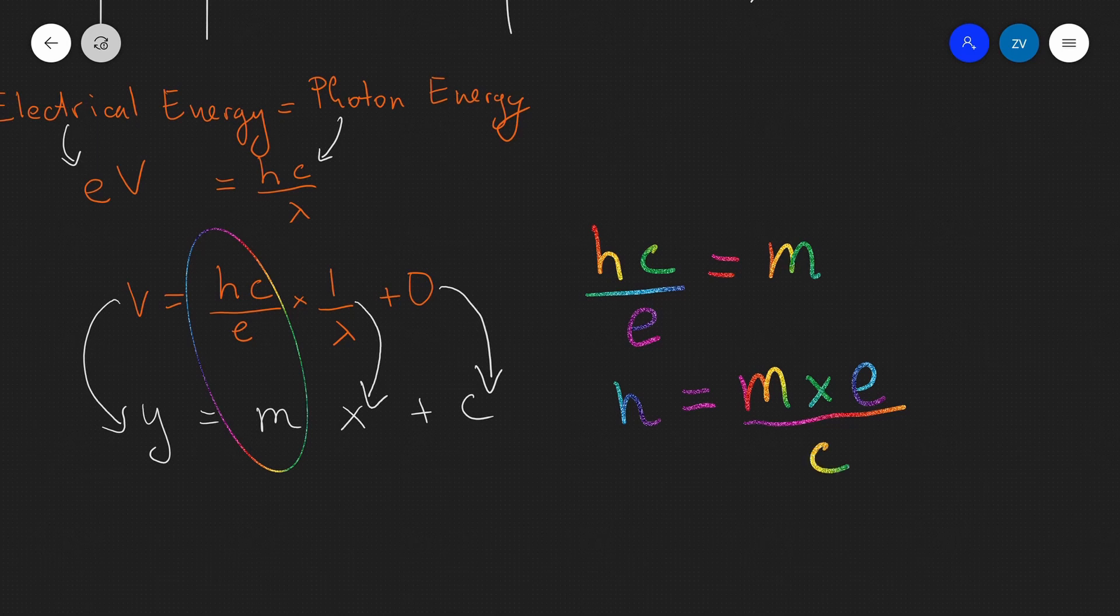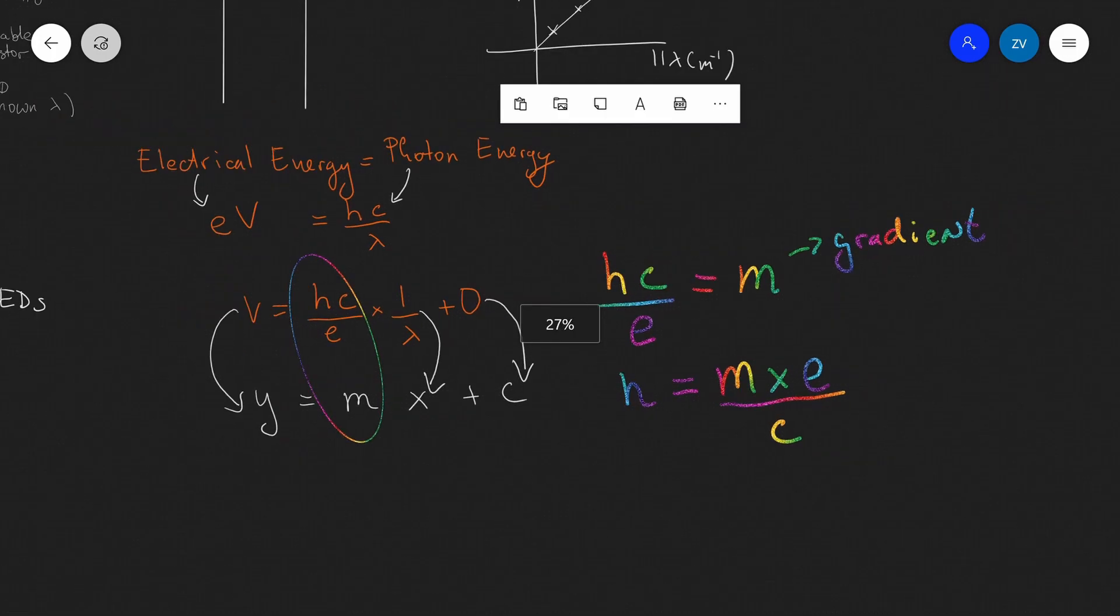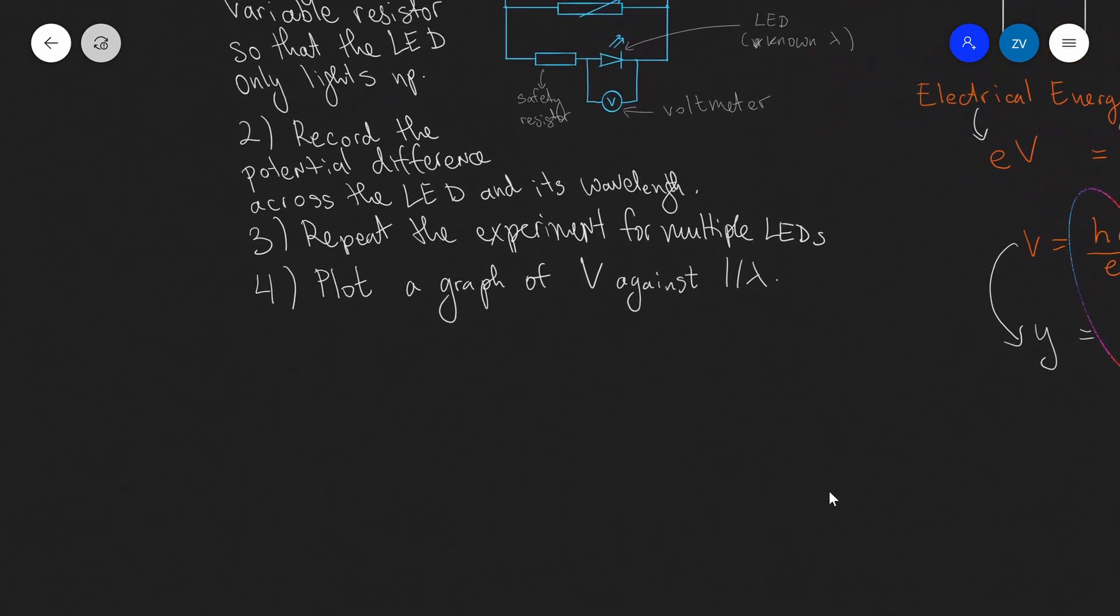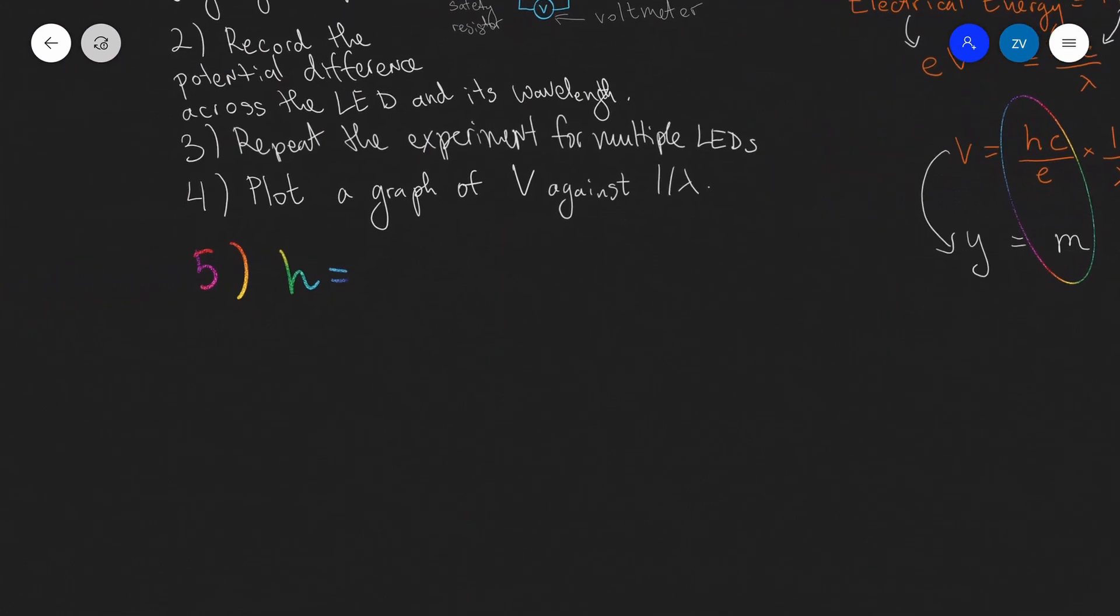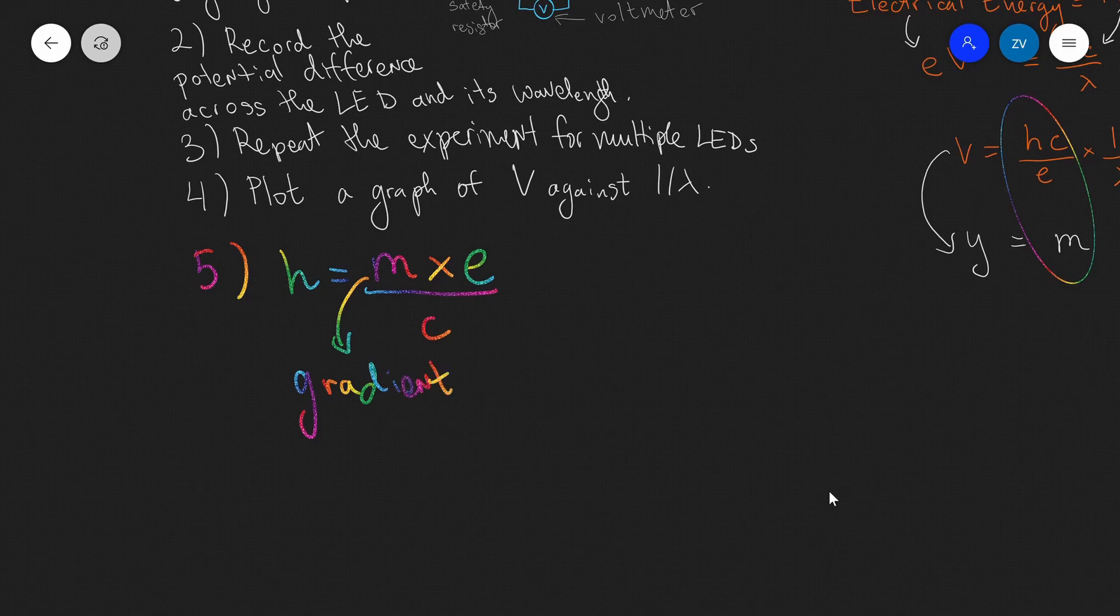Remember, e is just a constant, c is just a constant, and m is the gradient of our graph. So, using the following method, we can absolutely find Planck's constant using this experiment. In fact, this will be our final step in this experiment. So, because this is the final and most important step, let's use my rainbow pen. Once again, that Planck's constant h is, let's make sure we get the expression right, m e divided by c. So, the gradient times the electron charge divided by c, where this guy over here is the gradient of our graph.